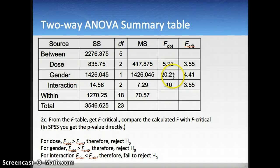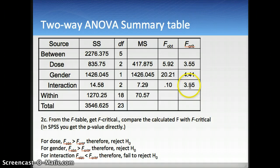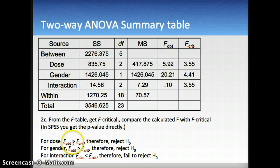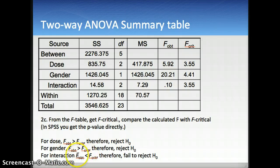For gender, we obtained an F value of 20, and F critical is 4.41 — so that is also significant. For the interaction, the observed F value is 0.10 and F critical is 3.55, so the observed is smaller than critical — a non-significant result. For dose and gender, the observed F exceeds F critical, so we reject the null hypothesis. For the interaction, the observed F is smaller than F critical, so we fail to reject the null hypothesis.